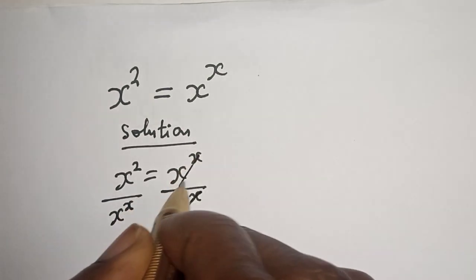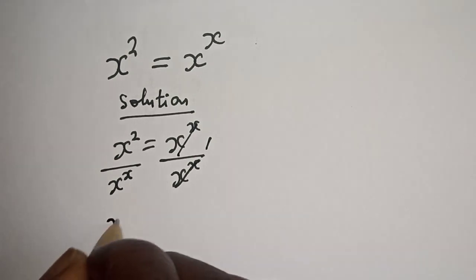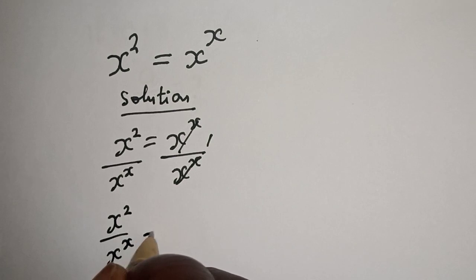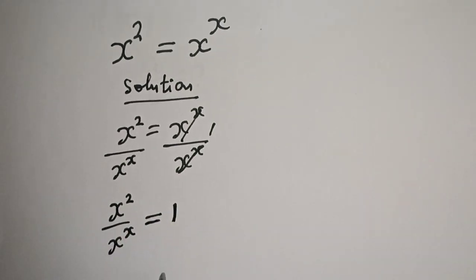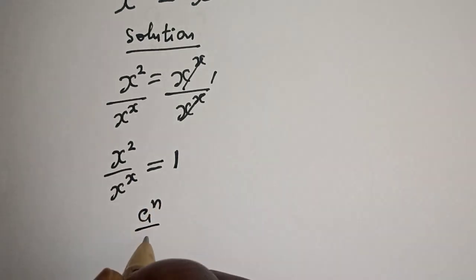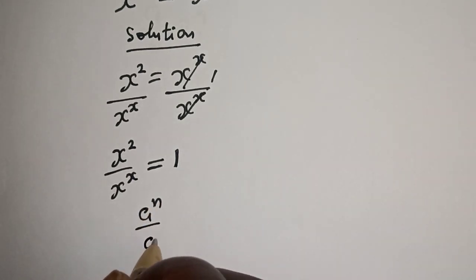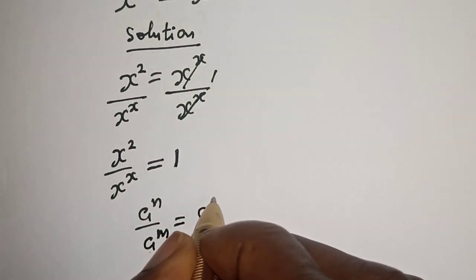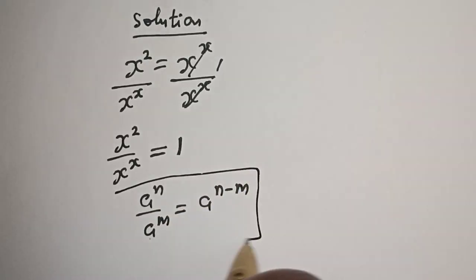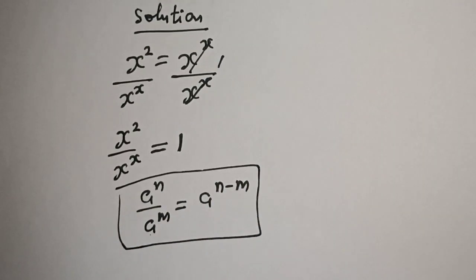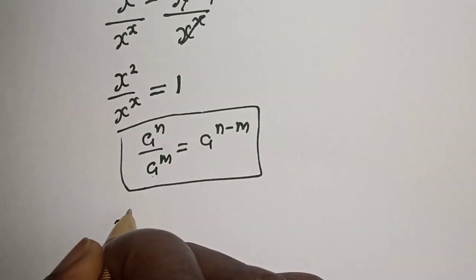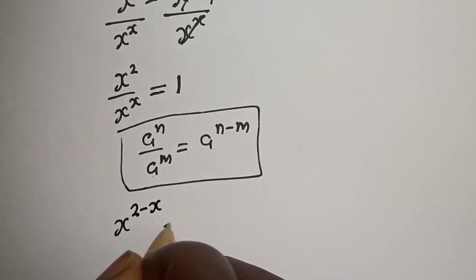The s terms cancel, so we have s squared over s to the power of s is equal to one. Now, using the rule that a raised to power n over a raised to power m equals a raised to power n minus m, this can be written as s raised to power 2 minus s is equal to one.